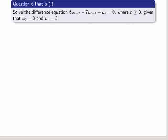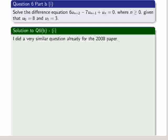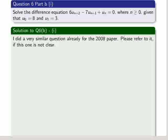Okay, part b is a difference equation. It's 6 times u_n+2 minus u_n+1 plus u_n equal to 0. We're given the n equal to 0 and n equal 1 values as usual. So it's a different difference equation, but it's very similar to the 2008 one in question 6, paper 2. Please refer to my video on that if this one isn't clear, but I'm going to do it from first principles anyway.